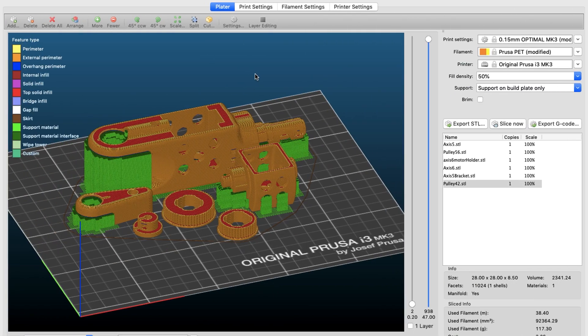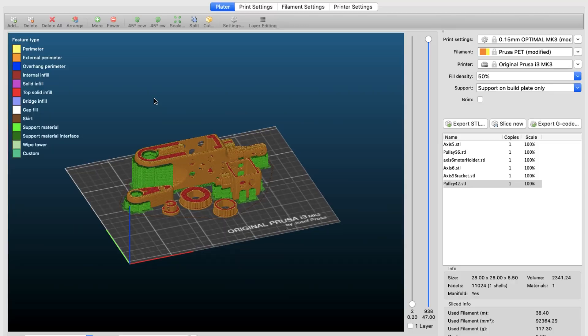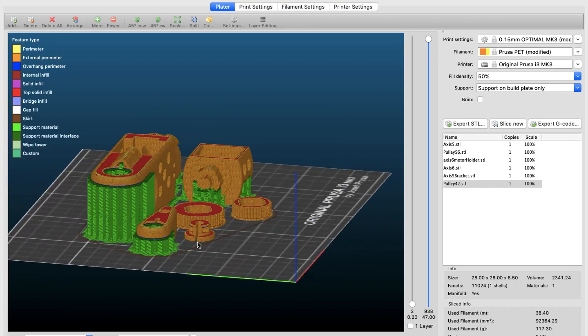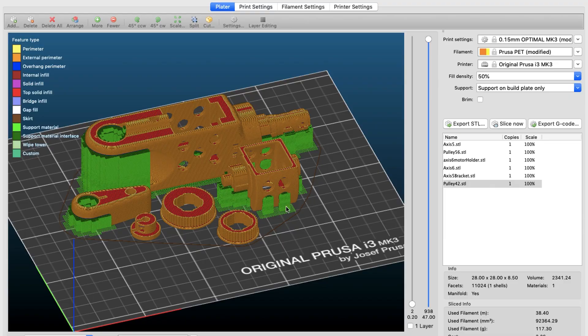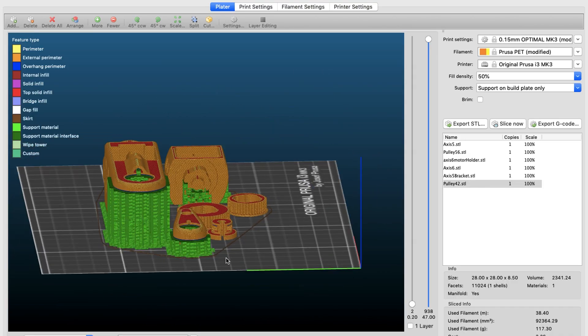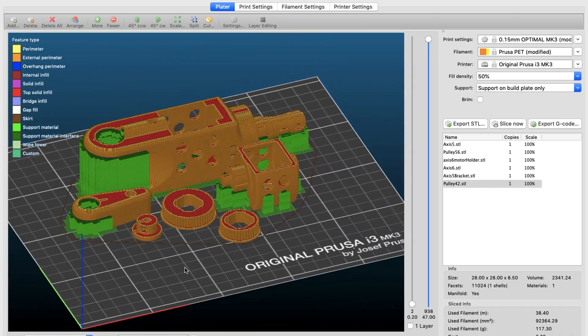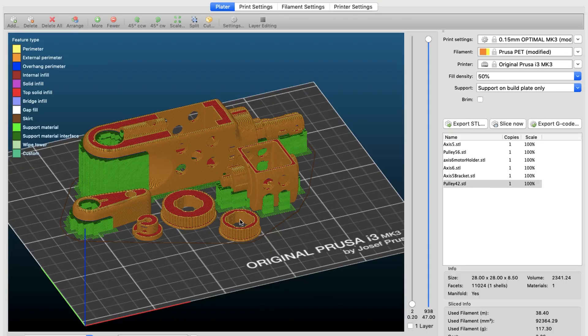So to 3D print it I used my Prusa i3 MK3. And this is the slicer. And you can see how I put all the parts on the bed. Of course I used support, but this is support only from the build plate. The fill density which I used is 50 percent. And I used PETG material just because it's more durable and it can handle higher temperatures than the usual PLA. I printed the parts separately because for me it's easier. Because if you have a fail like this it's only one part that fails and not all of them.